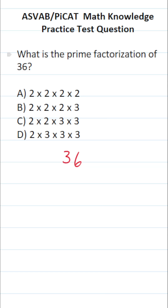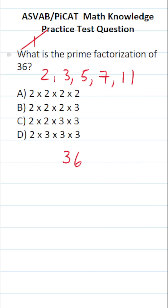A number is considered prime if it's only divisible by 1 and itself. Some of the common prime numbers you need to know are 2, 3, 5, 7, and 11. Note that 1 is never considered a prime number. Using these prime numbers as well as a factor tree, we're going to find the prime factorization of 36.